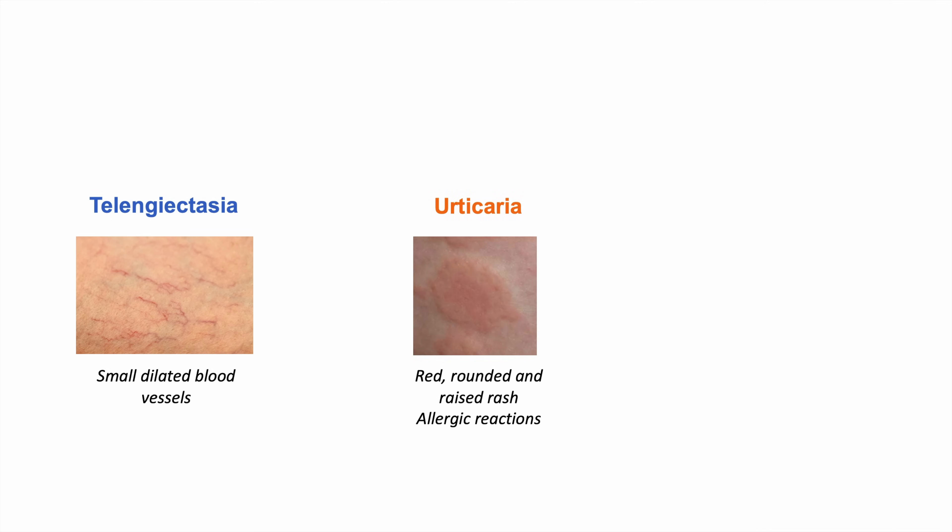Telangiectasia are small dilated blood vessels. Another very common skin manifestation is urticaria, which is just another word for hives. Urticaria are red, rounded, and a raised rash — you can remember the R's: red, rounded, raised rash. These are most often due to allergic reactions.